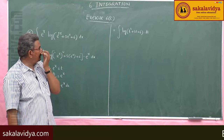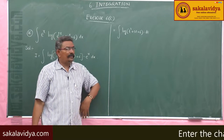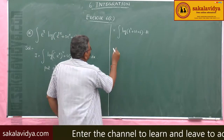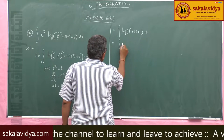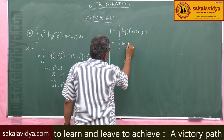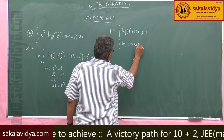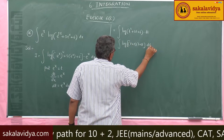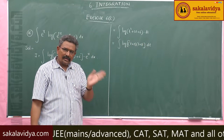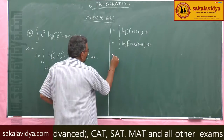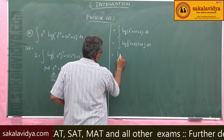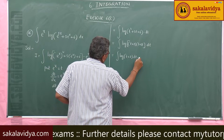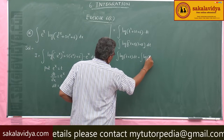We factorize t² + 5t + 6 as (t + 2)(t + 3). Using the logarithm property log(ab) = log a + log b, the integral becomes: integral of log(t + 2) dt plus integral of log(t + 3) dt.